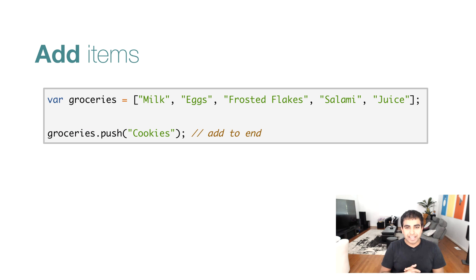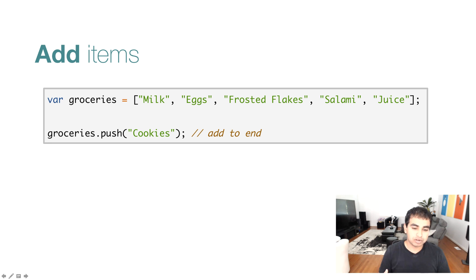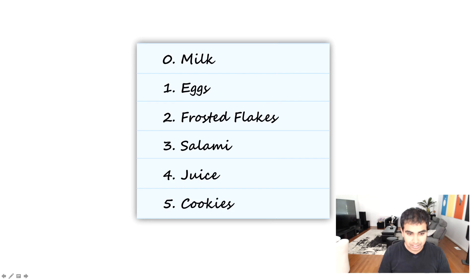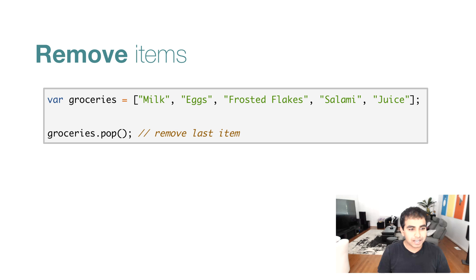Now we're going to look at the last two things: adding and removing items in the array. The way you add items is by using the push method. I'm doing groceries.push and the push method takes one or several arguments for what you want to add to the end of your array. I just have one item we're adding and it is cookies. So when you do groceries.push with cookies, the cookies item gets added to the end and now has an index position value of five. To remove an item, you have the pop method, which simply takes the last item from the array and removes it.